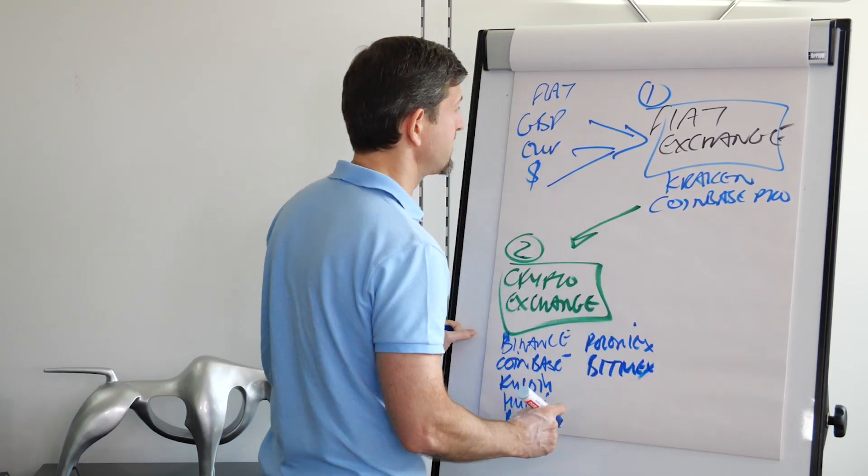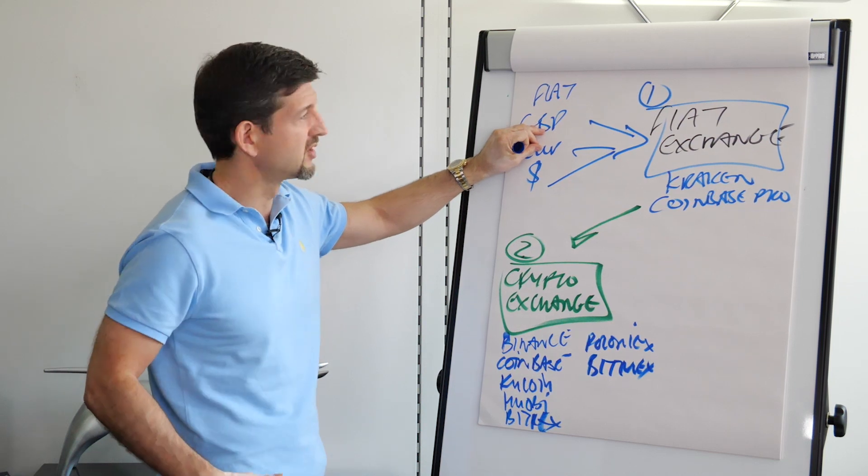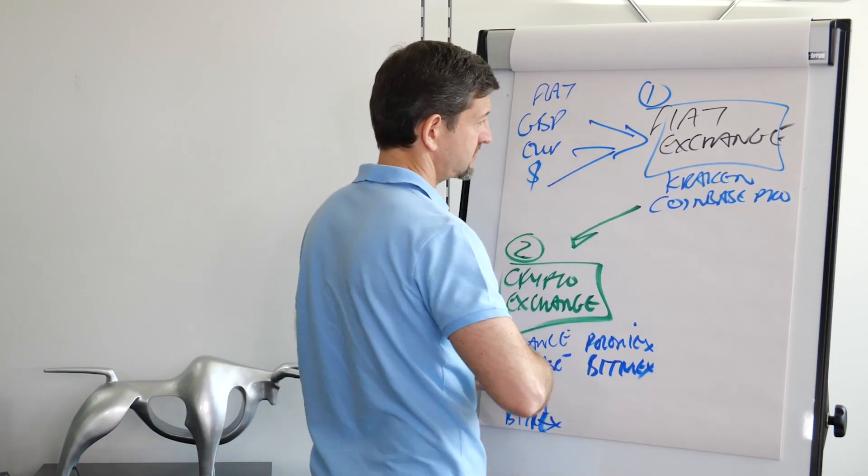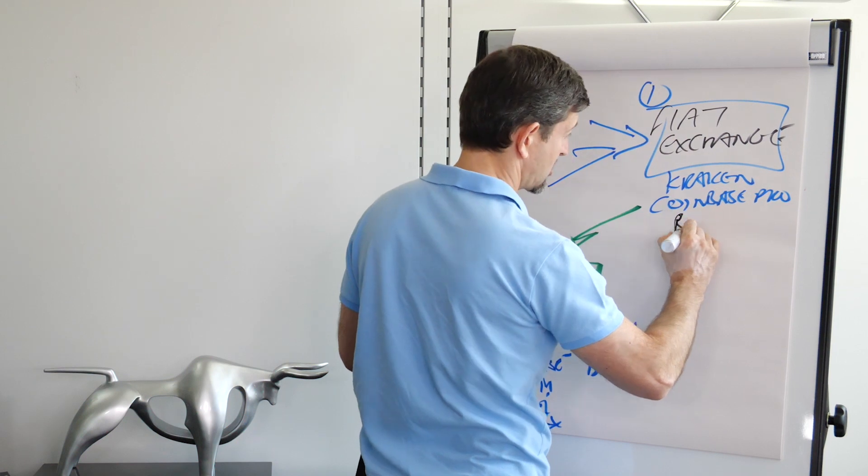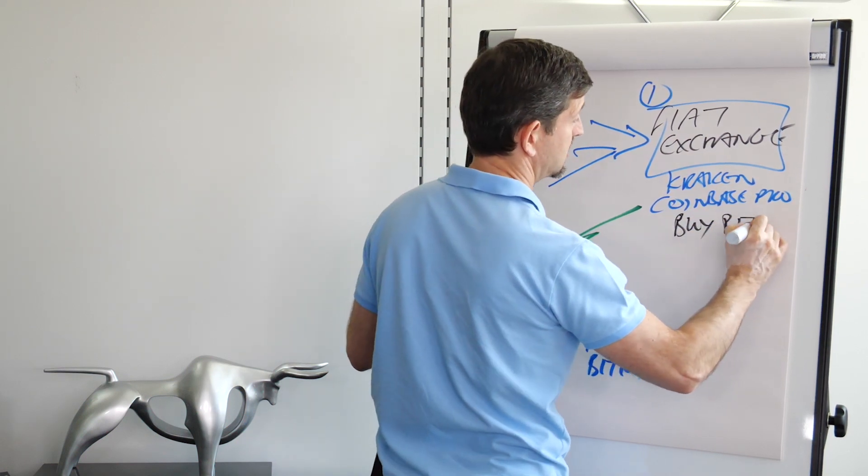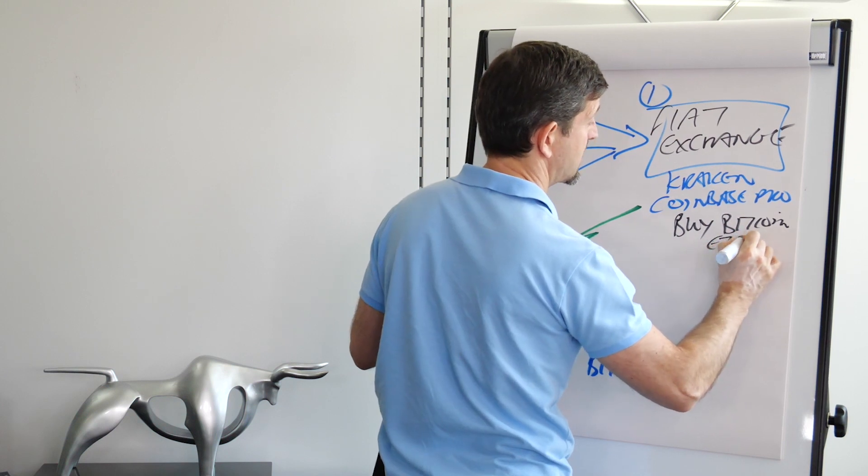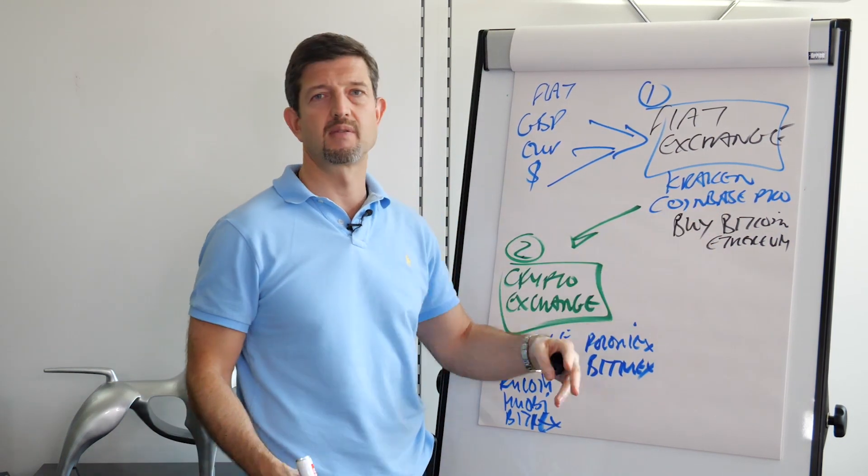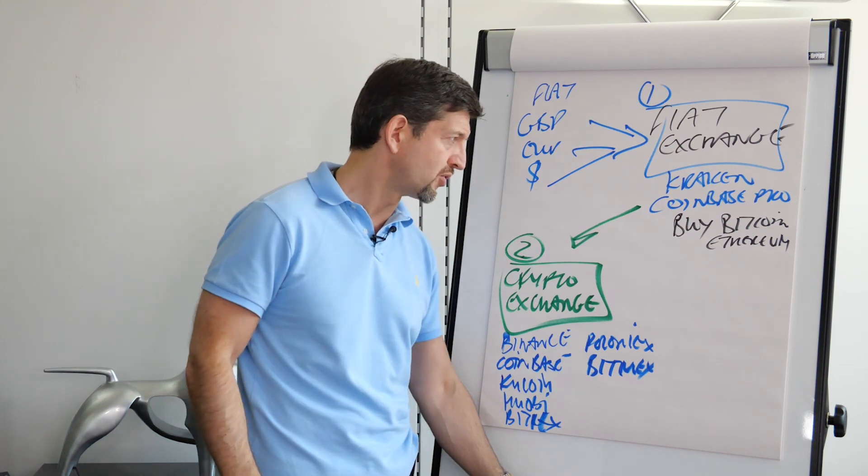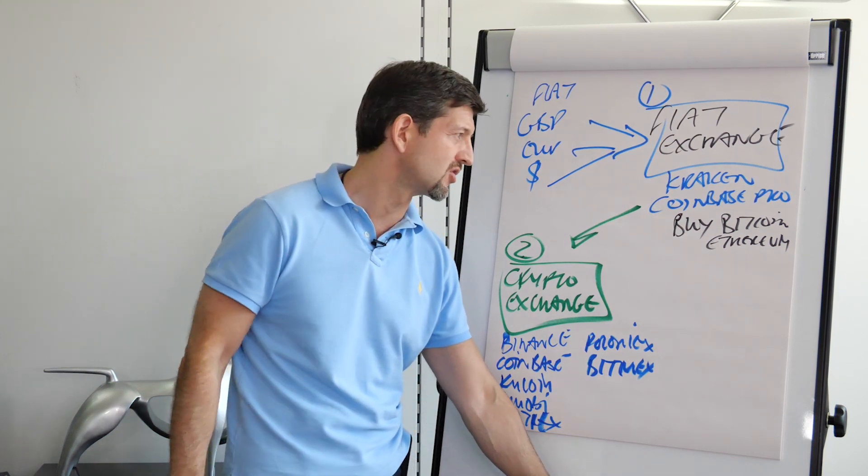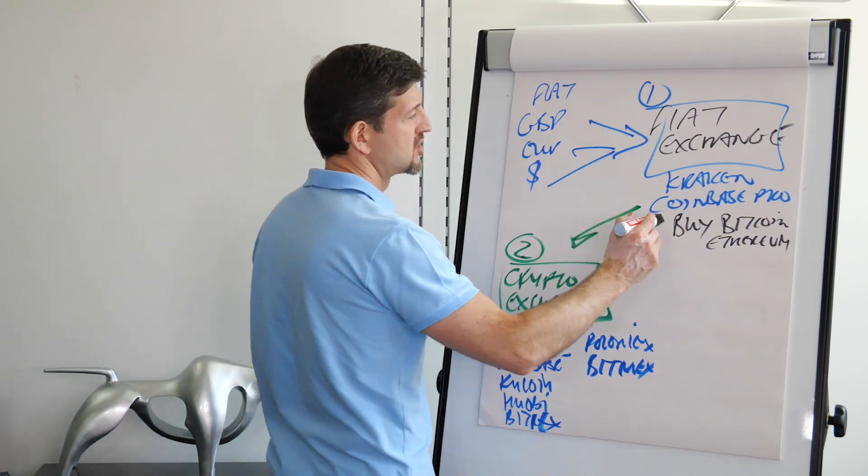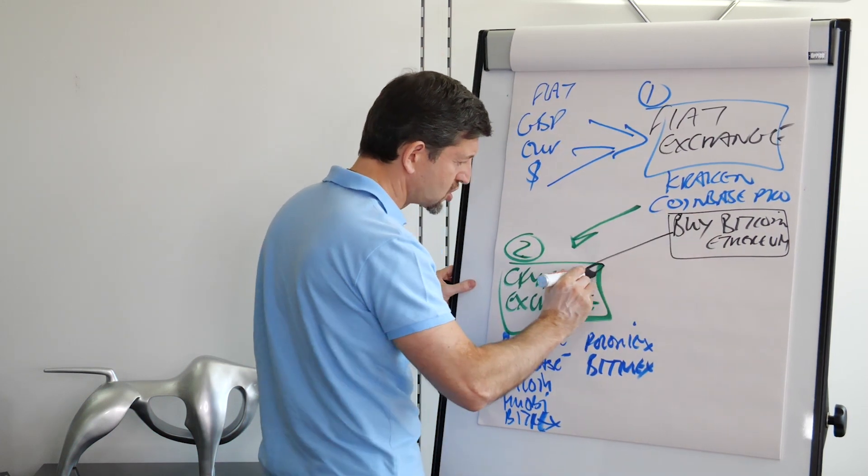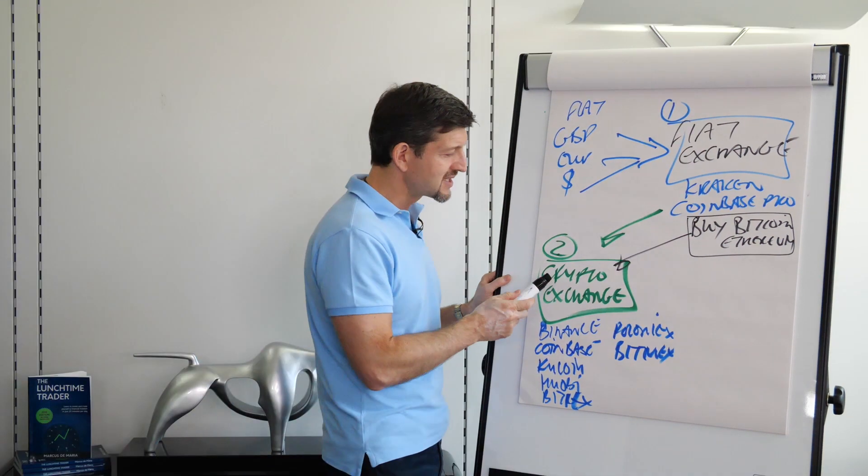So remember, you're going to get your money from your pocket or bank to a fiat exchange, and there you are going to buy whatever it is - Bitcoin or Ethereum. Bitcoin is generally blockchain 1.0, Ethereum is widely regarded as blockchain 2.0 because it's got more functionalities like smart contracts. Then you're going to send your Bitcoin or Ethereum onto a crypto exchange.